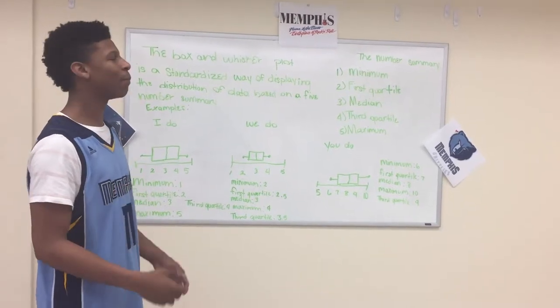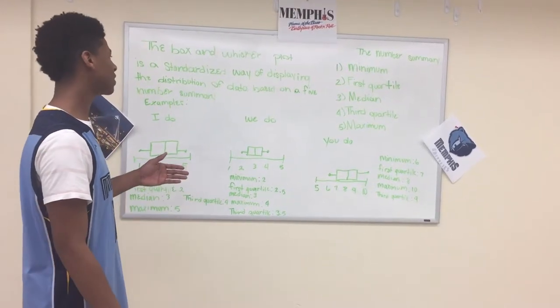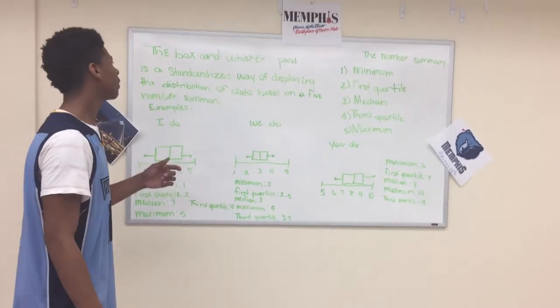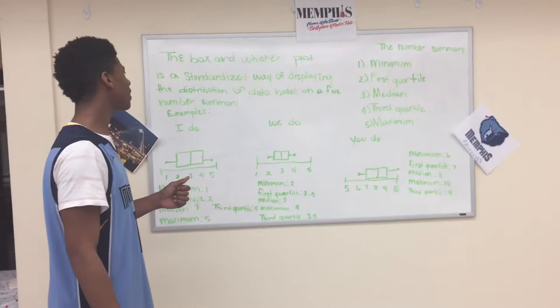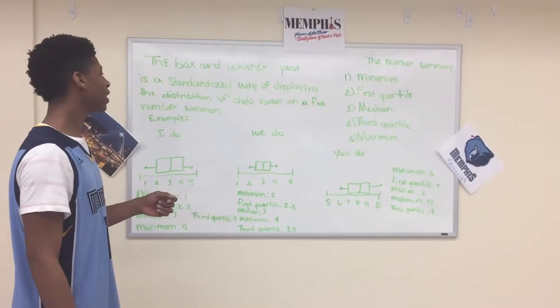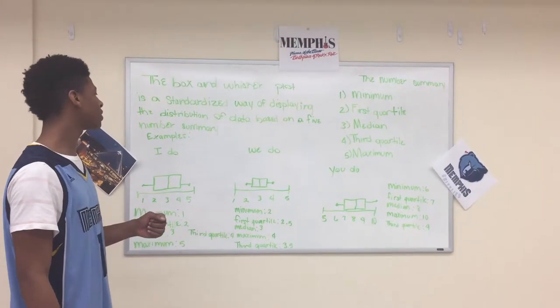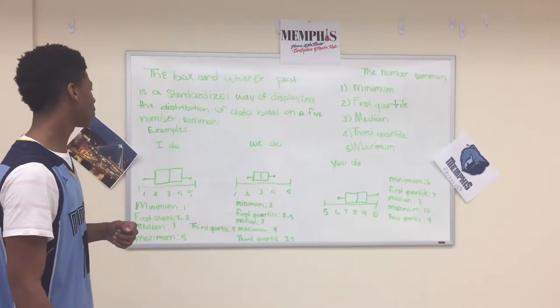My name is Dylan King and my presentation consists of the Box and Whisker Plot. The Box and Whisker Plot is a standardized way of displaying the distribution of data based on a five-number summary.